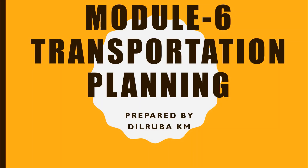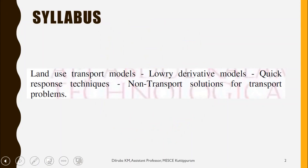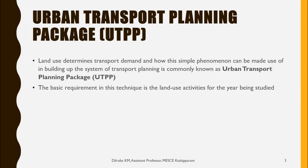Hello everyone, in this video we are going to see Module 6 of transportation planning. This is Dilroba KM. Let us overview the syllabus — we have a small portion to cover in this module, i.e., land use transport models, Lowry derivative, and quick response technique, and some non-transport solutions for transport problems.